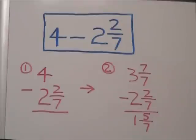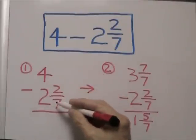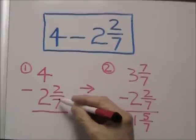The first thing we're going to do is rewrite our problem vertically so that we have 4 minus 2 and 2 sevenths. This will make the problem easier to work out.